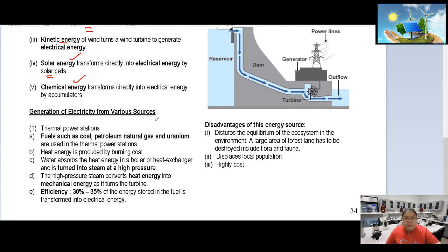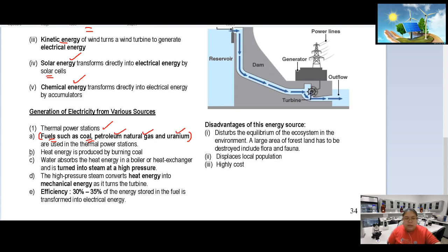Now let's look at the generation of electricity from various sources. First is the thermal power station, which uses heat. It uses non-renewable sources — coal, petroleum, natural gas, and uranium for nuclear. They produce heat energy by burning, water absorbs the heat in a boiler or heat exchanger, then high-pressure steam turns the turbine to generate electricity. The efficiency is only 30 to 35 percent because heat is lost.